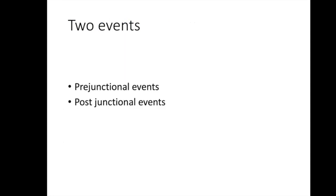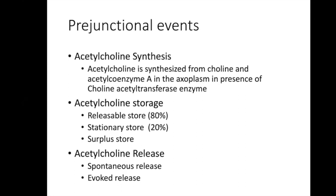When a transmission occurs, there are two main types of events: pre-junctional events in the nerves, and post-junctional events in the muscle or post-synaptic membrane. At the pre-junctional level, three main things happen: acetylcholine is synthesized, acetylcholine is stored, and acetylcholine is released.